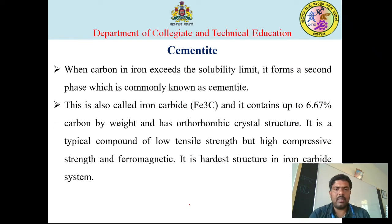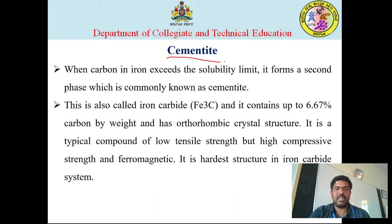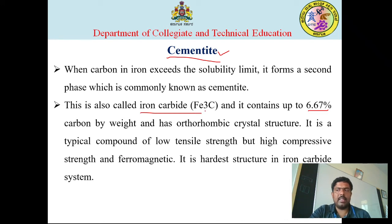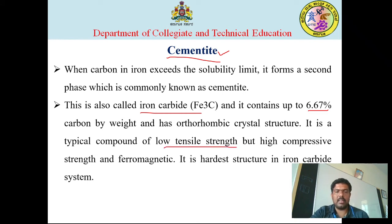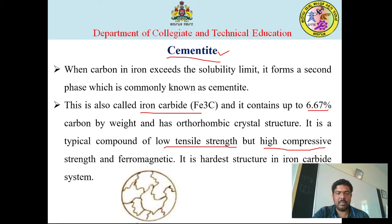Next is cementite. Cementite is the ultimate product obtained when iron is combined with the maximum percentage of carbon. It is the strongest and hardest among all the phases, containing up to 6.67% carbon by weight. It has an orthorhombic crystal structure. It is a compound of low tensile strength but high compressive strength. Cementite is stable at room temperature.